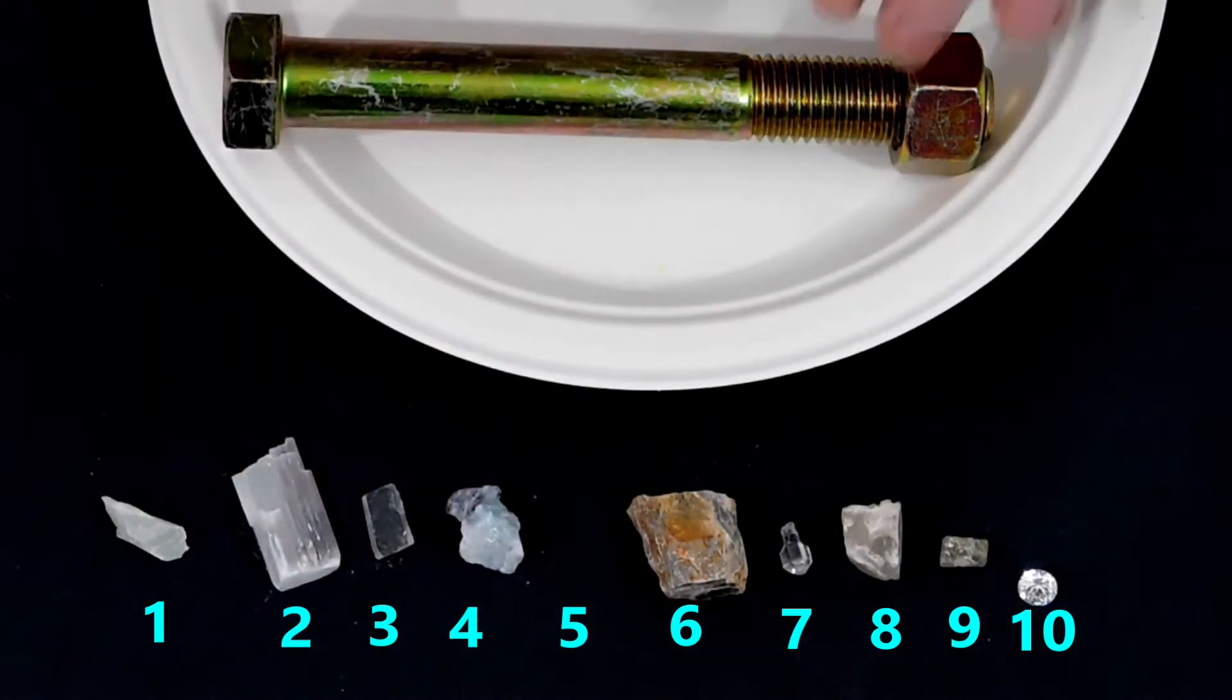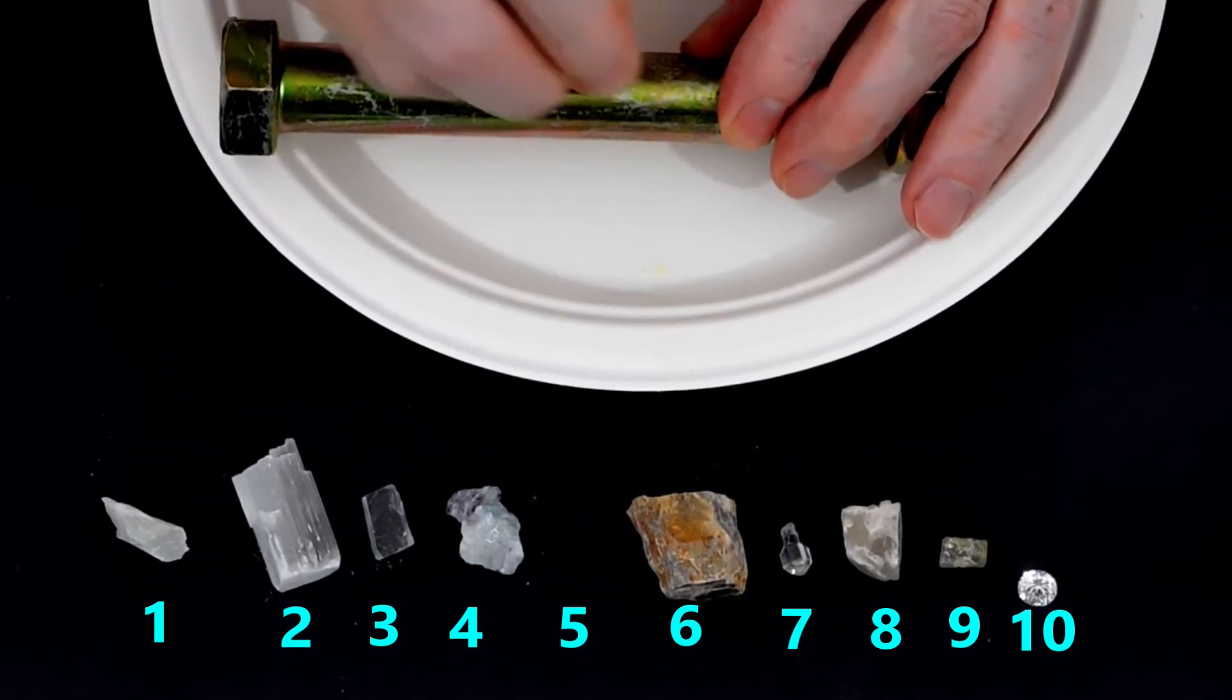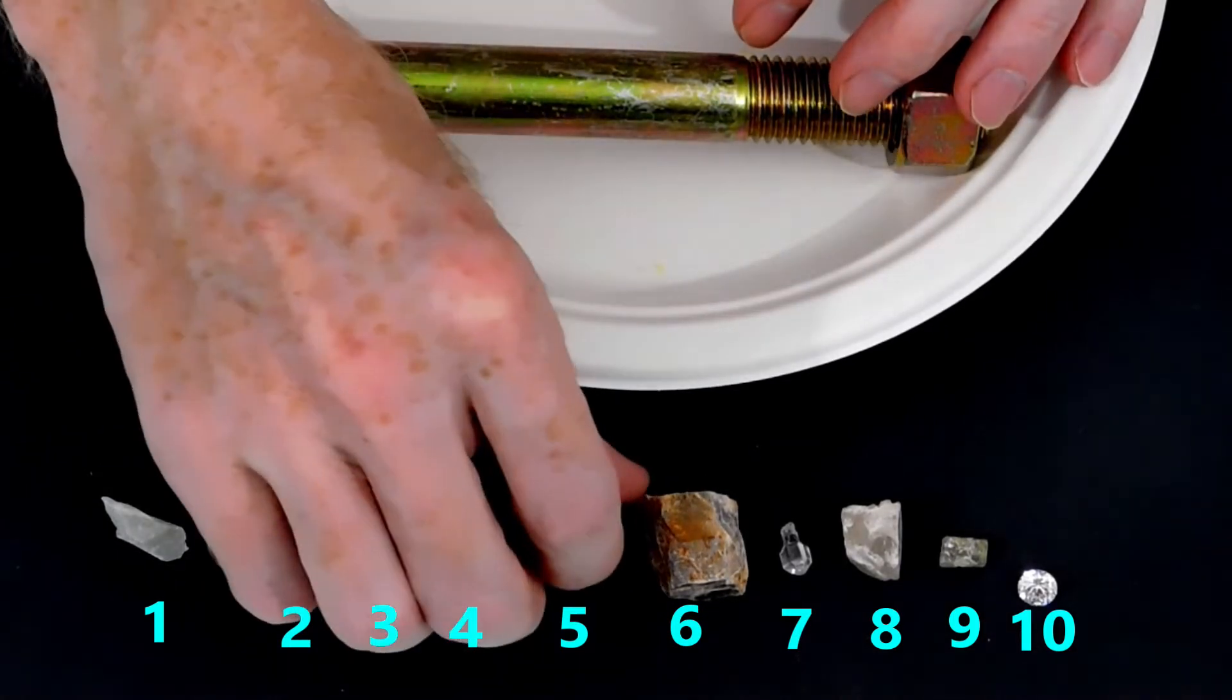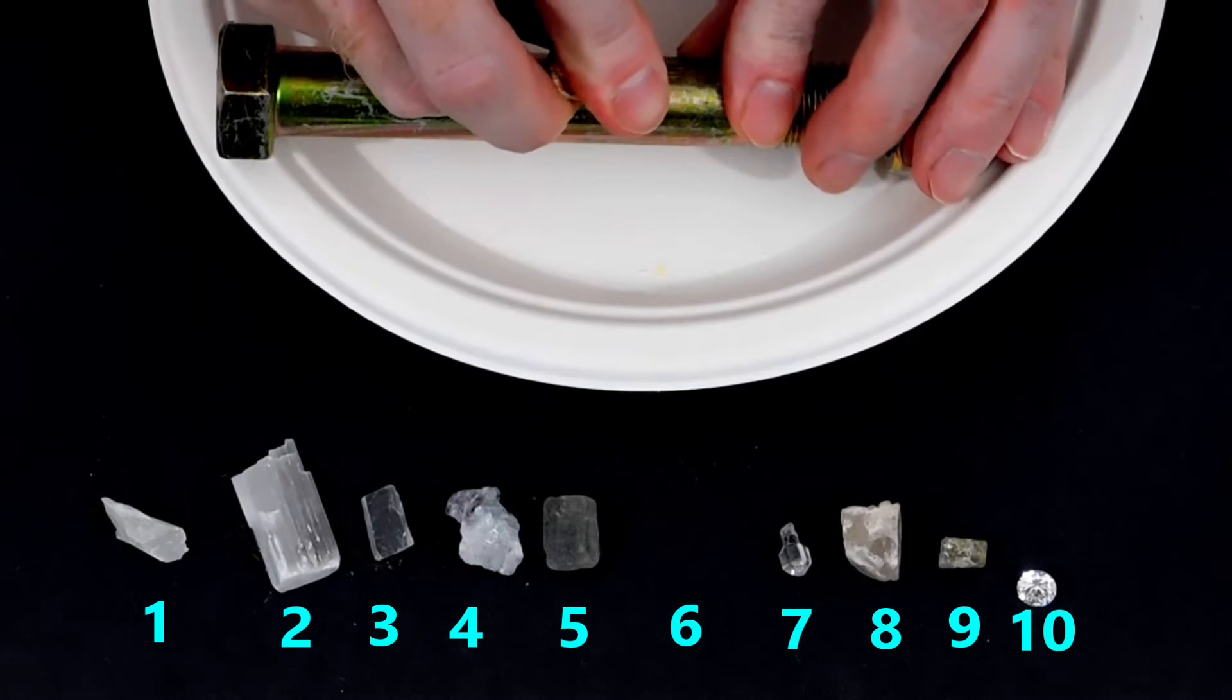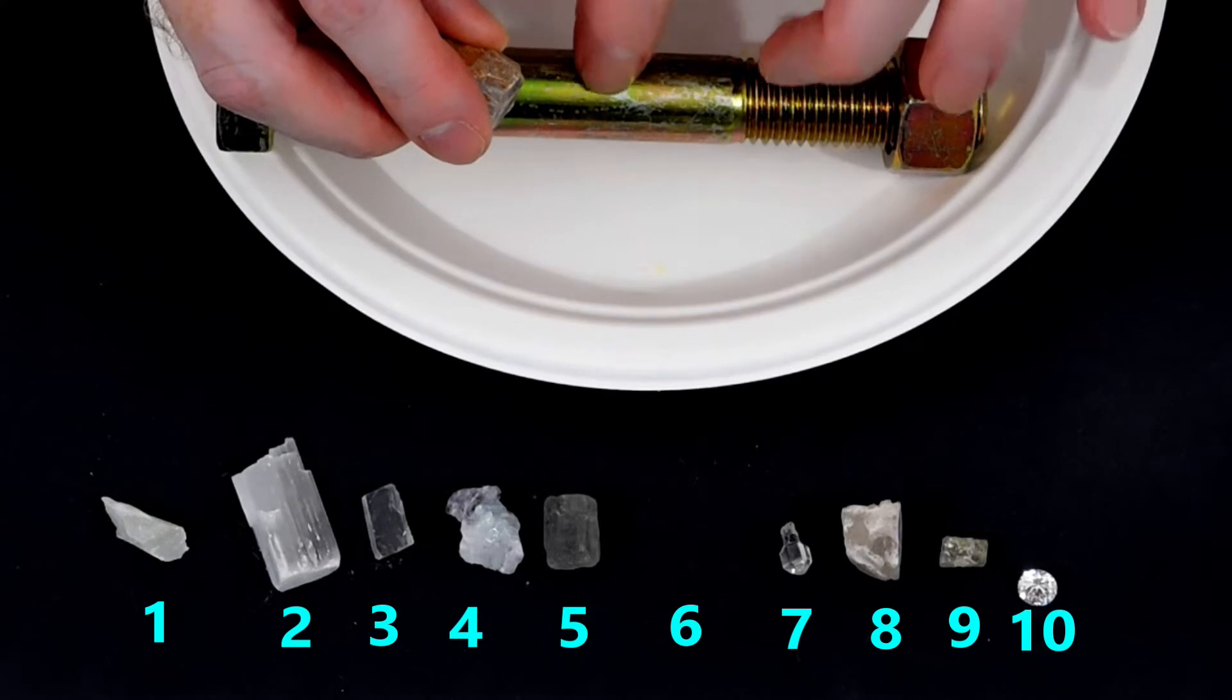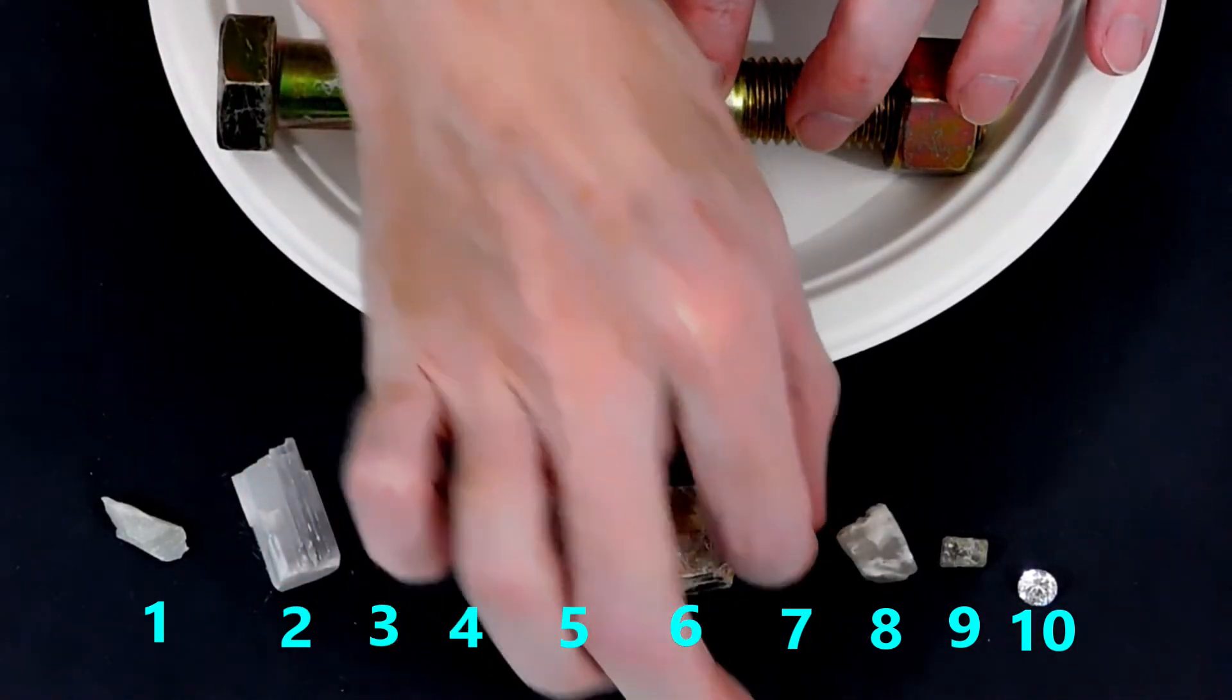Let's try a bolt. We start with the fifth hardest mineral, which is apatite. It cannot scratch the bolt, so that means the bolt is harder than the apatite. Next, we'll try orthoclase feldspar. Likewise, we find it also cannot scratch the bolt. To confirm, we use a fingernail to feel for a scratch and cannot feel one. So the bolt is harder than a value of 6.